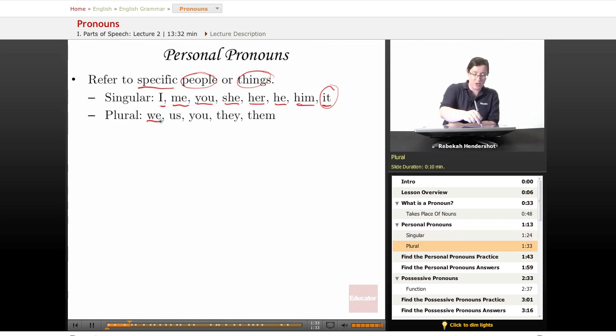Now, the plural version: we, us, you again, they, and them. All of these words can stand in for people or things. Let's look at some examples.